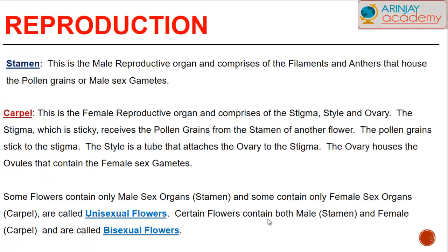The stamen, the male reproductive organ, comprises of the filaments and anthers that house the pollen grains or male sex gametes. The carpel is the female reproductive part of the plant and comprises of the stigma, style, and ovary. The stigma, which is sticky, receives the pollen grains from the stamen of another flower, and these pollen grains get stuck to the stigma. The style is a tube that attaches the ovary to the stigma and is the means by which pollen grains can travel down. The ovary houses the ovules that contain the female sex gametes.